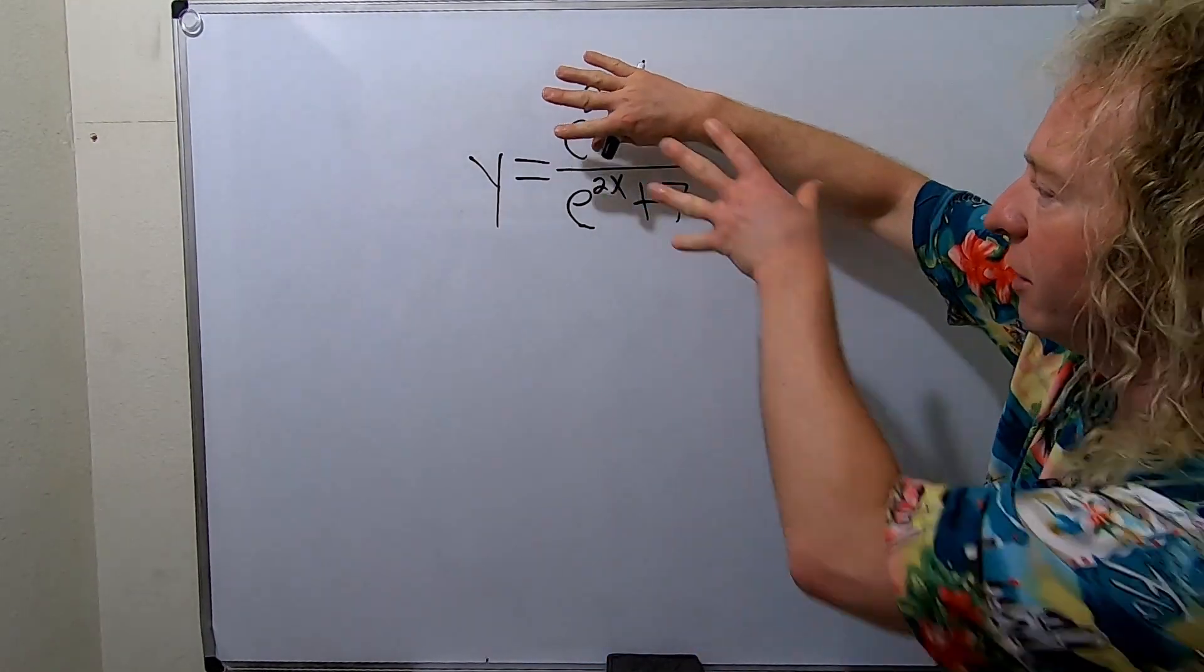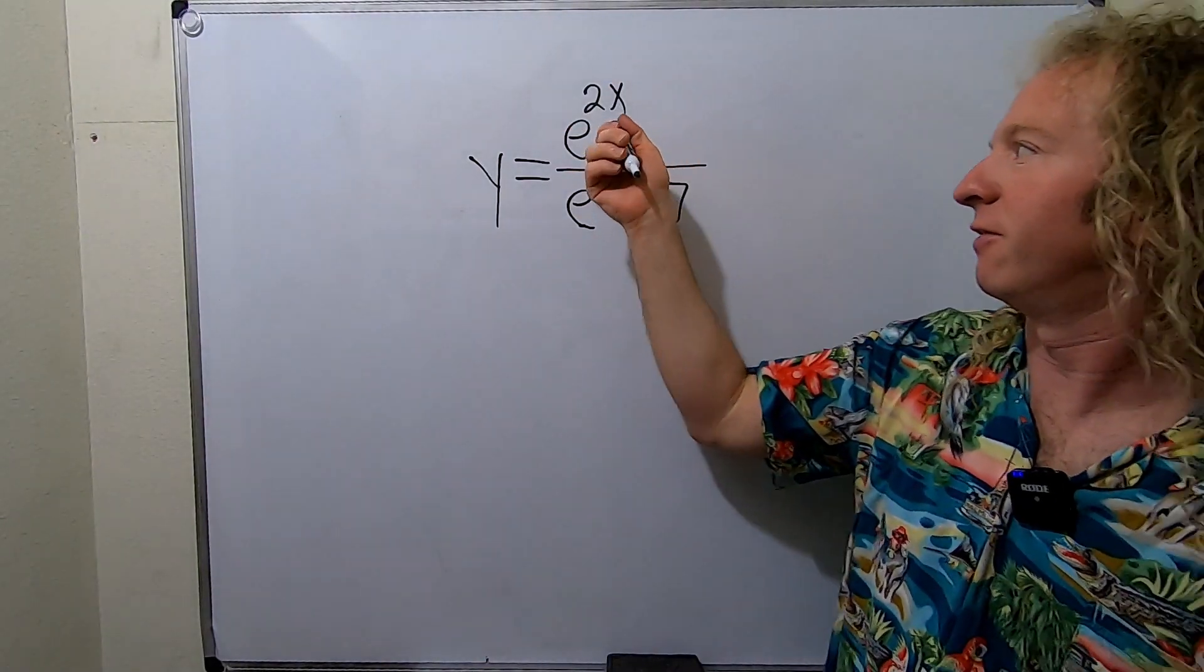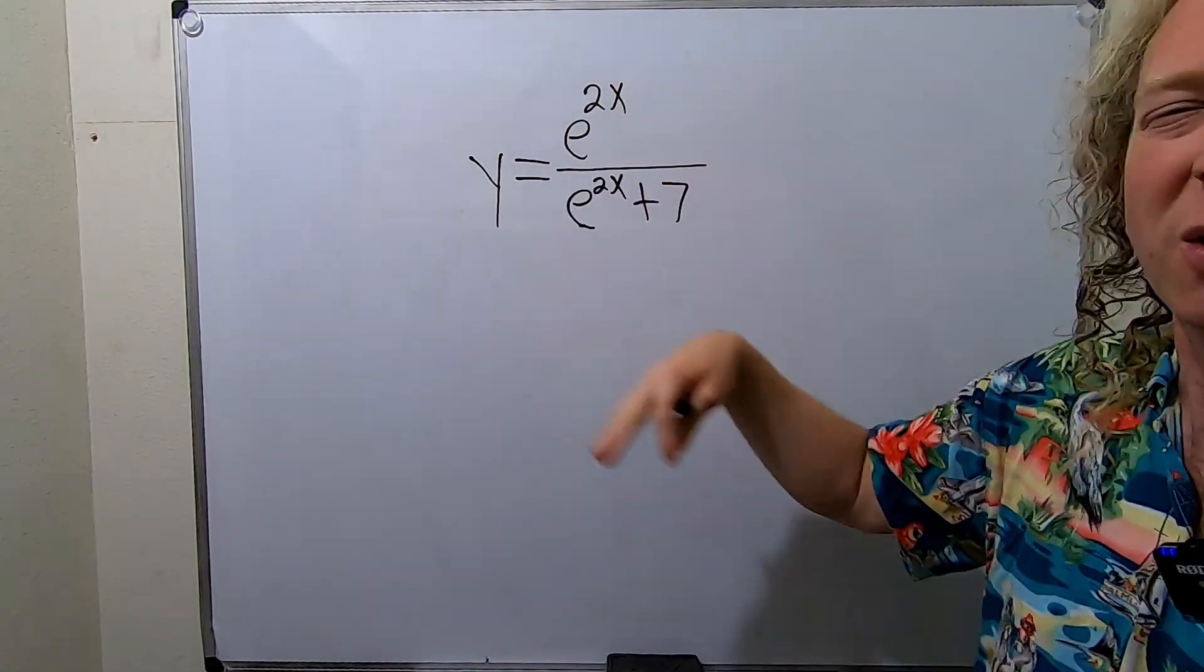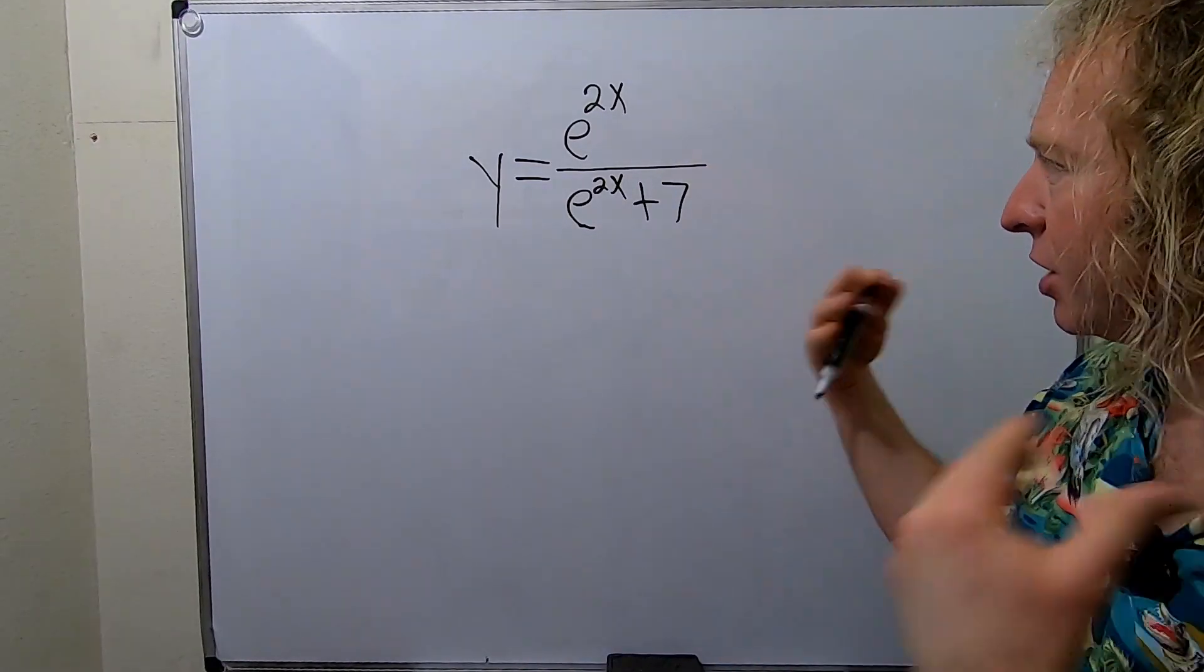If instead I had a number here like 1, then you would bring it up and just take the derivative using the chain rule. But since it's a function of x over a function of x and you can't really simplify it in any nice, clever way, let's just take the derivative.